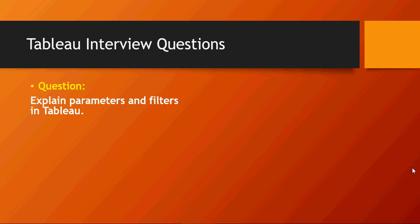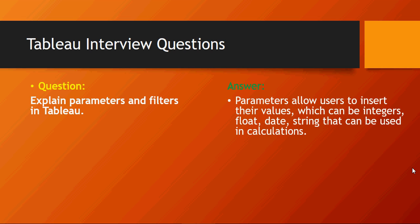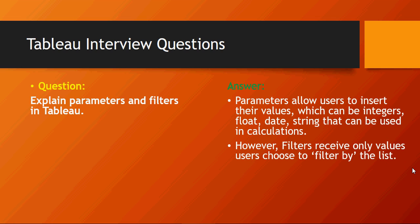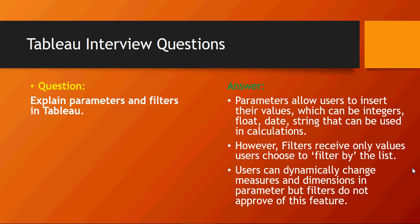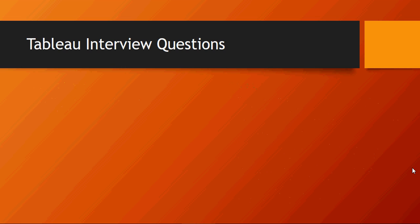Explain parameters and filters in Tableau. Parameters allow users to insert their own values, which can be integers, float, date, or string. Filters receive only the values from the list chosen as the filter. Parameters can dynamically change the measures and dimensions, but filters do not have this feature.